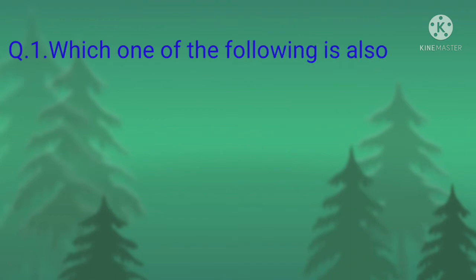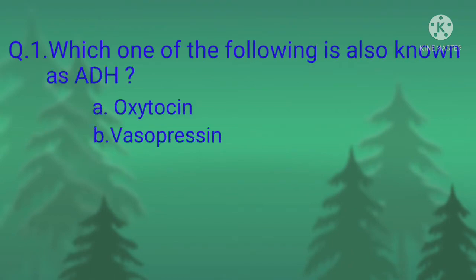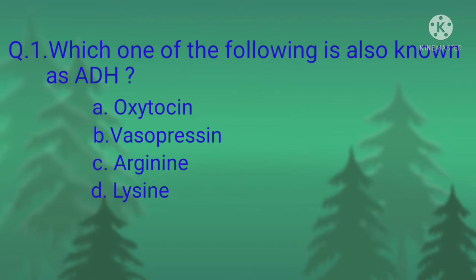Hello everybody. Today I am going to discuss MCQs on effects of different types of hormones. Let's start. The first question: which one of the following is also known as ADH? ADH means antidiuretic hormone.